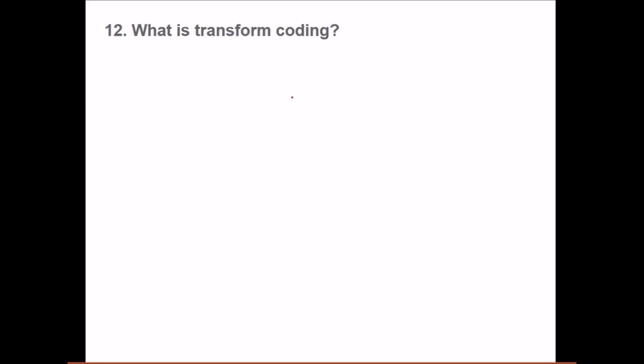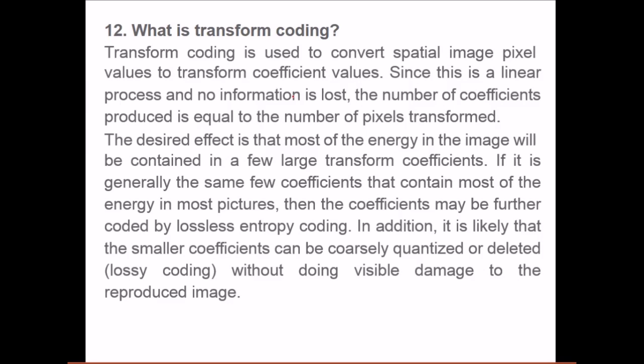What is transform coding? Transform coding is used to convert spatial image pixel values to transform coefficient values. Since there is a linear process and no information is lost, the number of coefficients produced is equal to the number of pixels being transformed. The desired effect is that most of the energy in the image will be contained in a few large transform coefficients. If it is generally the same few coefficients that contain most of the energy in most pictures, then the coefficients may be further coded by some lossless entropy coding. In addition, it is likely that some smaller coefficients can be coarsely quantized or deleted even, ignored without doing visible damage to the reproduced image.